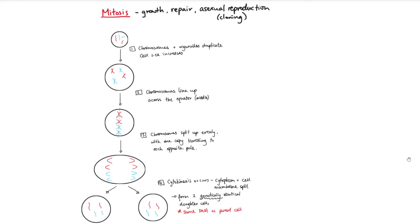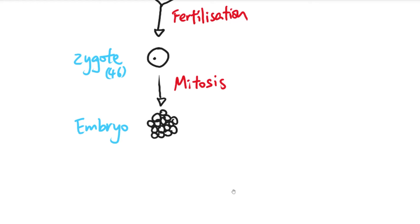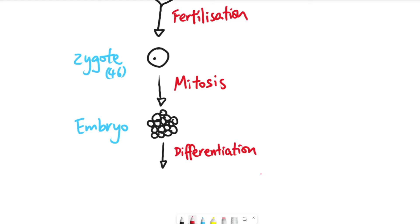The daughter cells can go on to do mitosis themselves — from two cells to four, four to eight, eight to sixteen, and so on. That is how we get from a single zygote into an embryo, which is a ball of cells. But keep in mind that we are not simply a ball of cells — we are made up of lots of different specialized cells: red blood cells, white blood cells, skin cells, muscle cells, and many more. So how can a single cell like a zygote or embryo produce all these different types? That is through the process of differentiation.